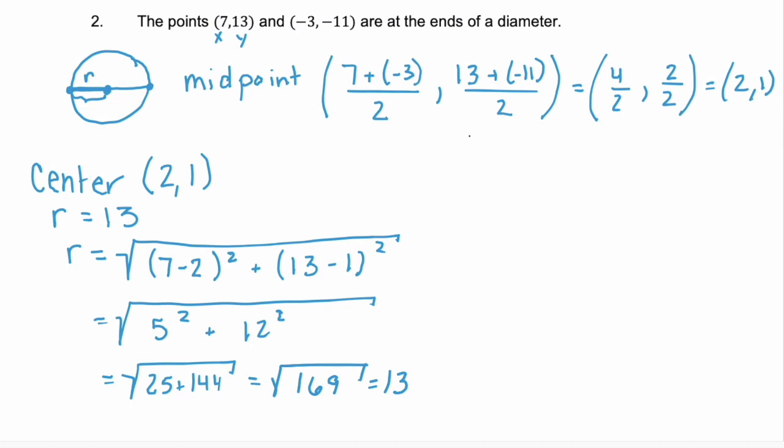Now we go back and we look at the equation for a circle, x minus h squared plus y minus k squared equals r squared. Now we substitute in what we know, x minus h, which is 2, squared, plus y minus k, 1 squared, equals 13 squared.